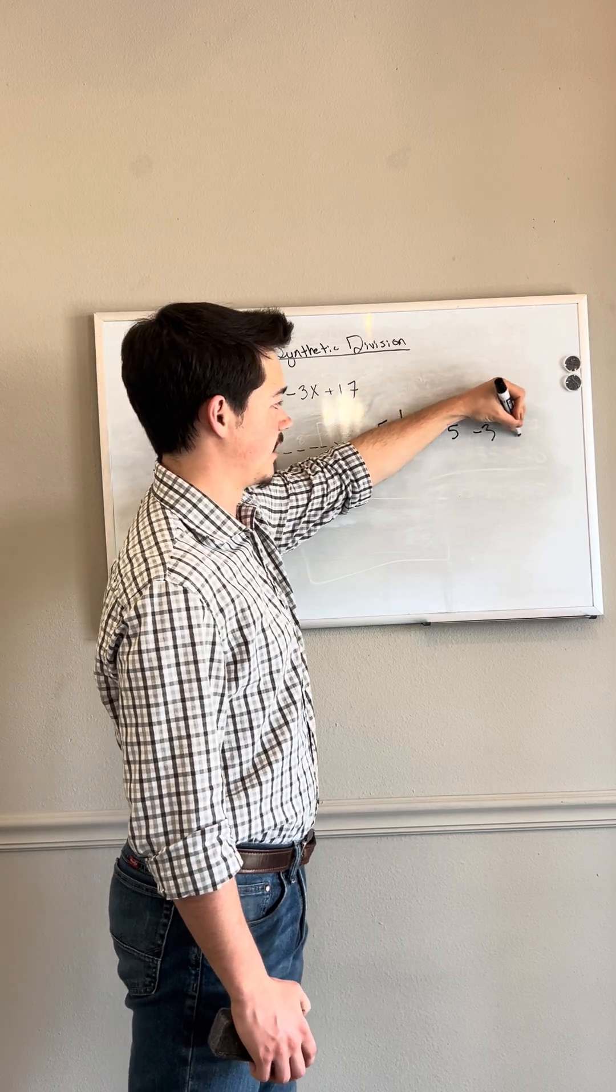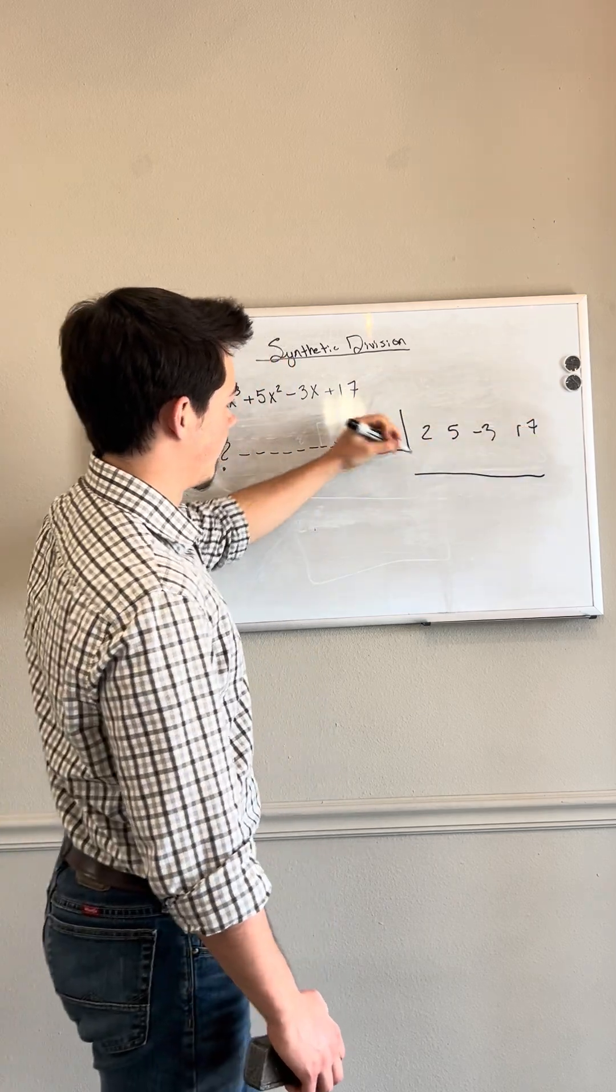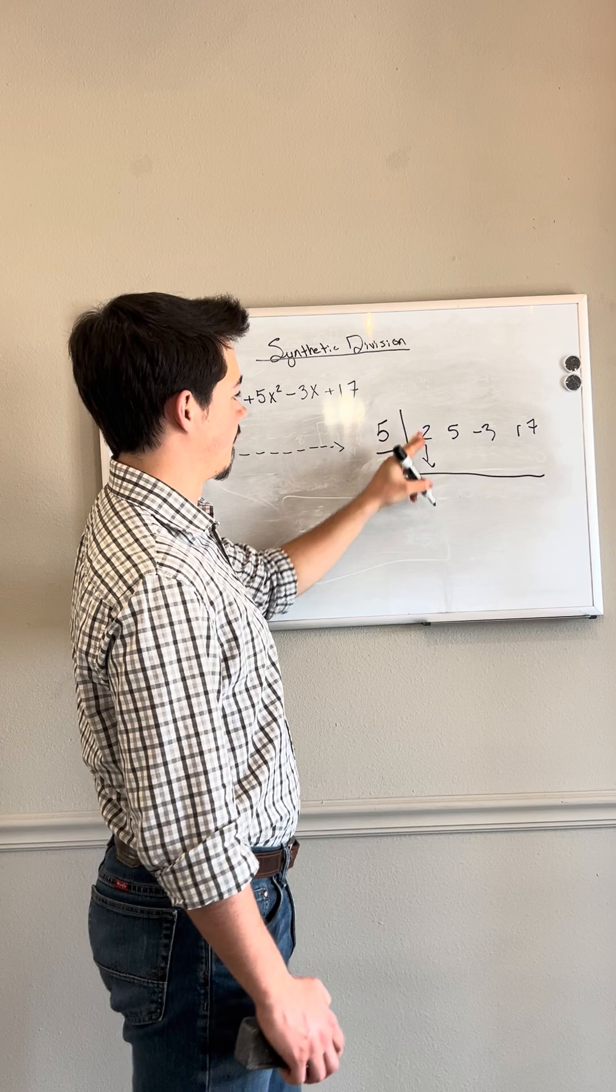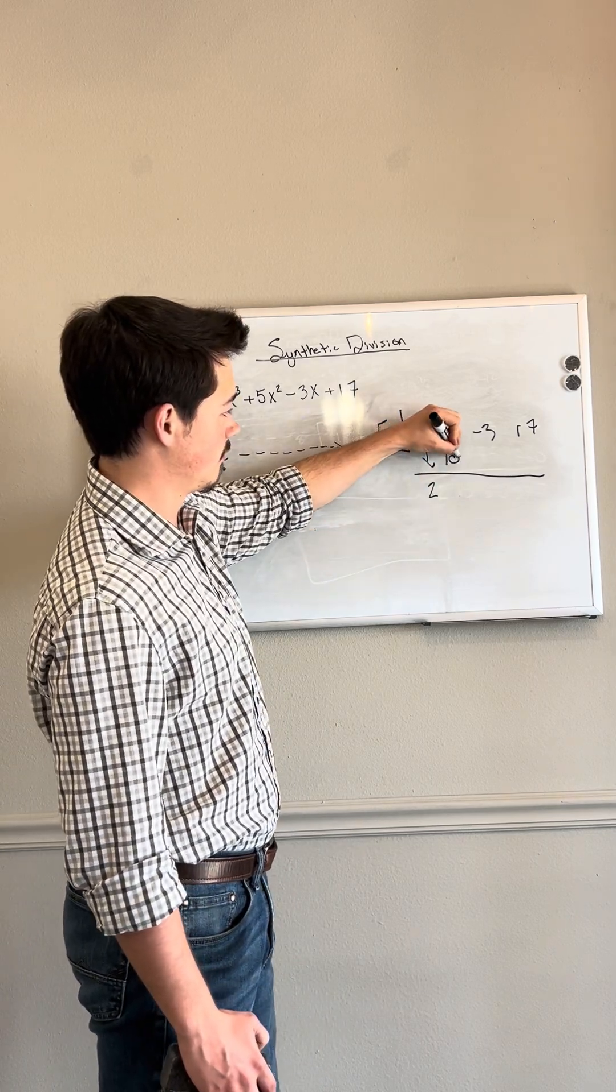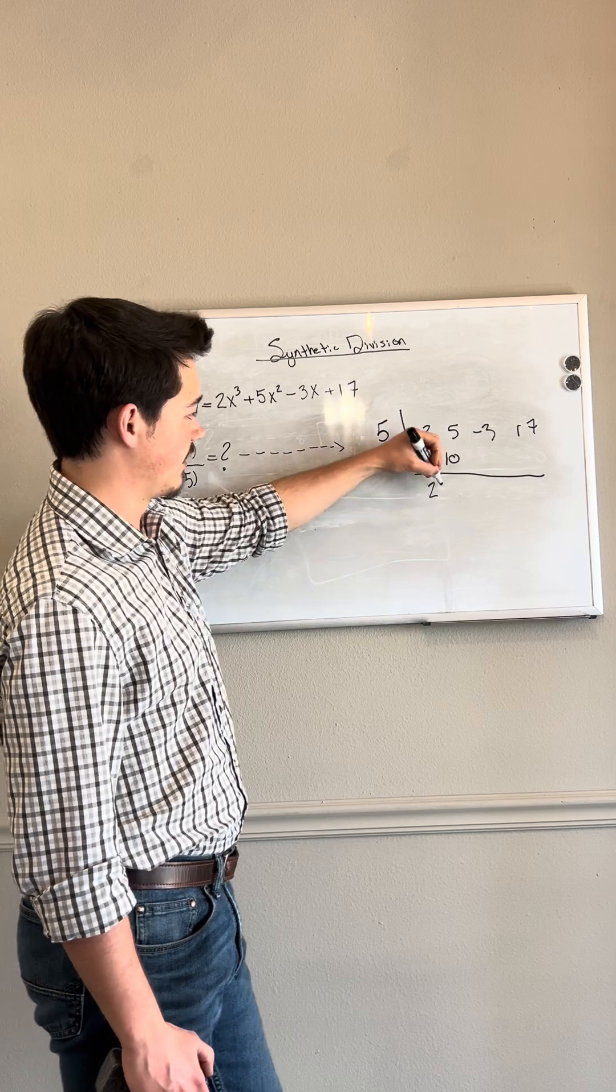So 2, 5, negative 3, 17. And the way we're going to go about solving this is we'll drop down our first coefficient, 2. We'll multiply it by c, that gives us 10. We'll add these two numbers vertically, giving us 15.